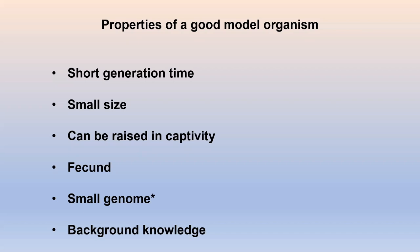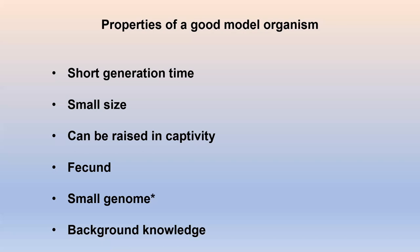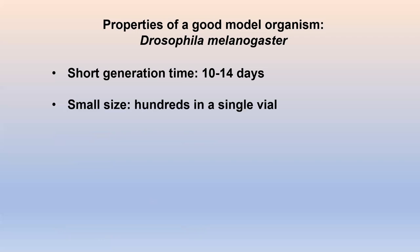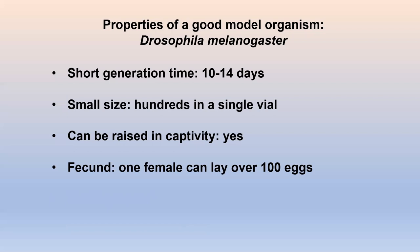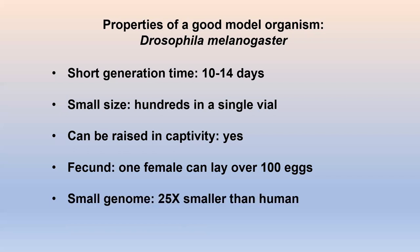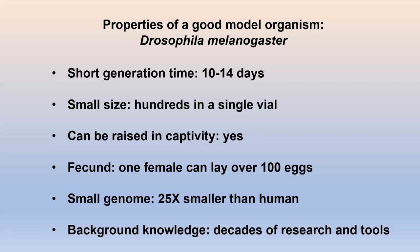It's also useful to have background knowledge, so that if we know something about the organism, we can move forward faster. Drosophila melanogaster has a generation time of 10 to 14 days — 14 days is convenient because that's two weeks, meaning we don't have to go into the lab on a weekend. If you have a vial about that big, you can put hundreds of flies in it. One female can lay over 100 eggs in her lifespan, and their genome is about 25 times smaller than the human genome. There are decades of research and tools in Drosophila, and those tools are one of the things that make Drosophila so valuable.